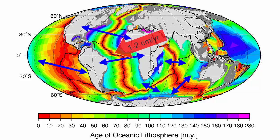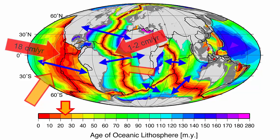In fact, as this image shows, it is the slowest spreading center in the world. If we look only at the apricot color age range, we see that during that time period the Atlantic spread only this far, but the southeastern Pacific spread much further. The East Pacific spreading center spreads at a rate of about 18 centimeters per year.